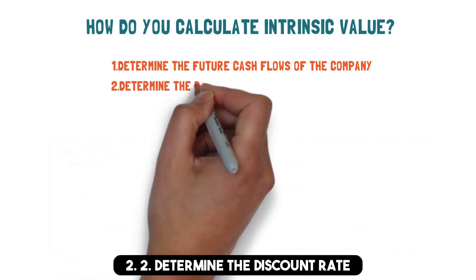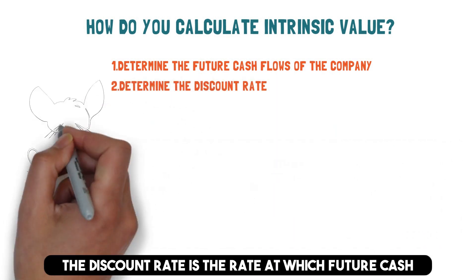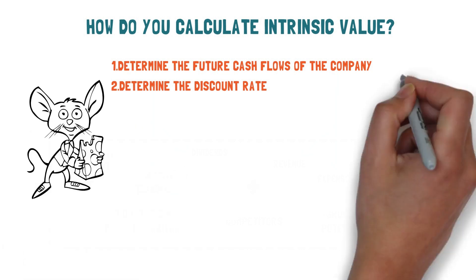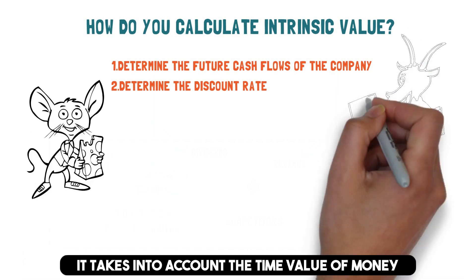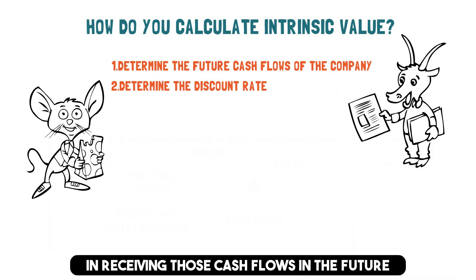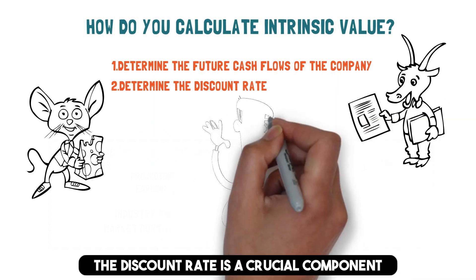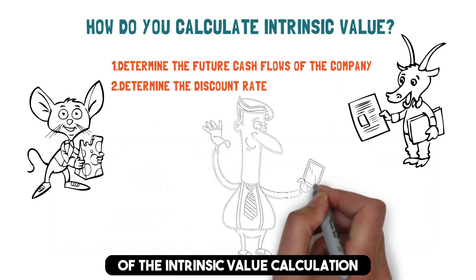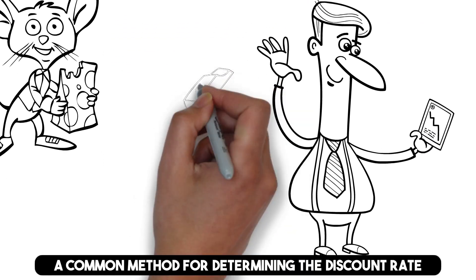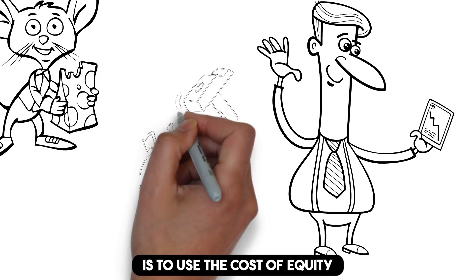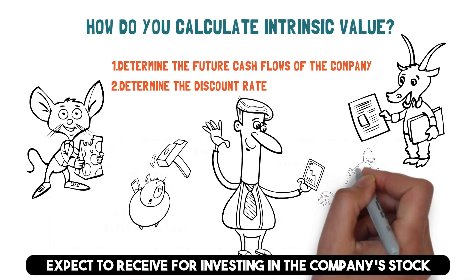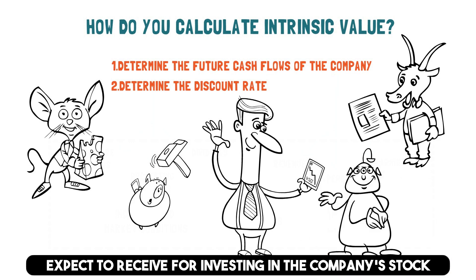Step 2: Determine the discount rate. The discount rate is the rate at which future cash flows are discounted to reflect their present value. In other words, it takes into account the time value of money and the risk involved in receiving those cash flows in the future. The discount rate is a crucial component of the intrinsic value calculation and should be carefully considered. A common method for determining the discount rate is to use the cost of equity, which reflects the rate of return that investors expect to receive for investing in the company's stock.